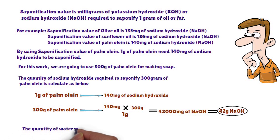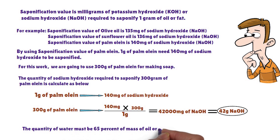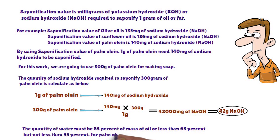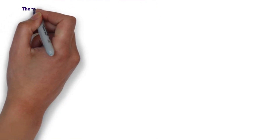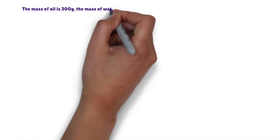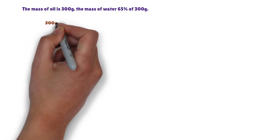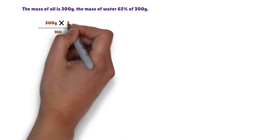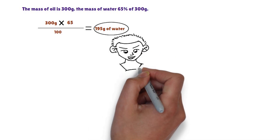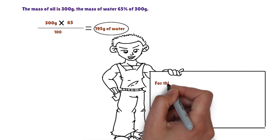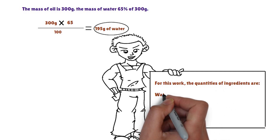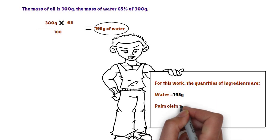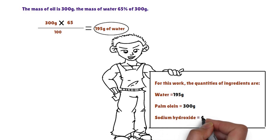Answer for question number two: the quantity of water must be 65 percent of the mass of oil. The quantity of water required for 300 grams of palm oil is calculated below. The mass of water is 65 percent of 300 grams, which equals 195 grams. So the quantities are: water = 195 grams, palm oil = 300 grams, sodium hydroxide = 42 grams.